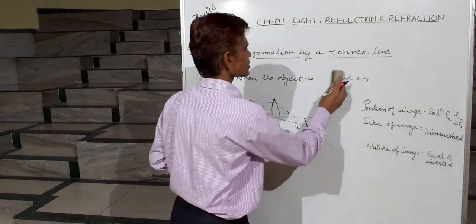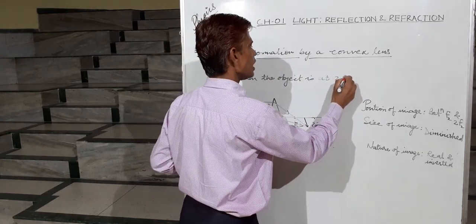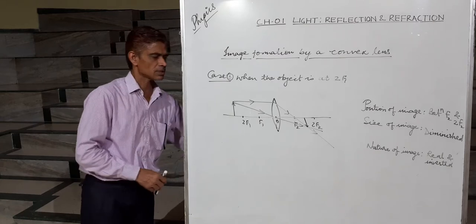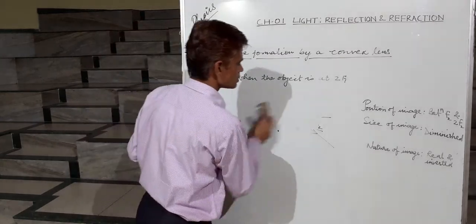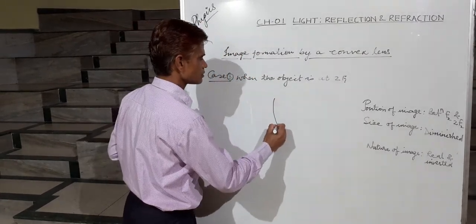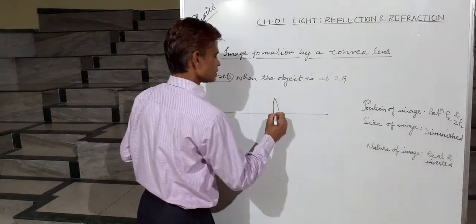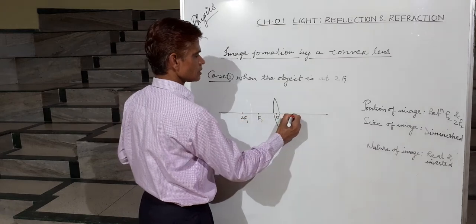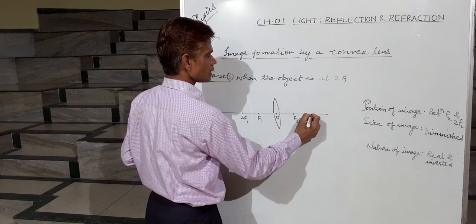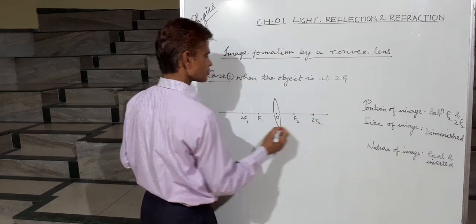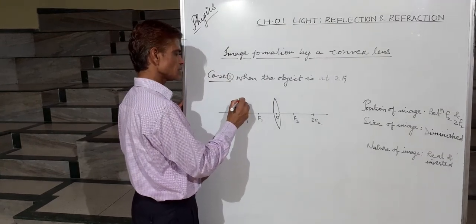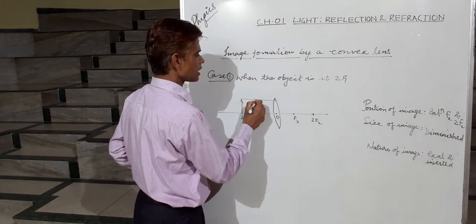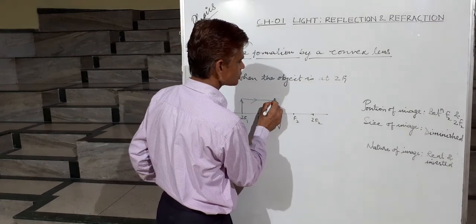Now case number 3, where the object is at 2F1 itself. Let us see where the image is formed. This is the optical center, F1, 2F1, F2, and 2F2. The object is placed at 2F1. Take one ray parallel to the principal axis — after refraction it passes through F2.